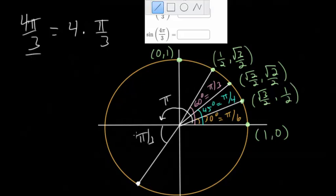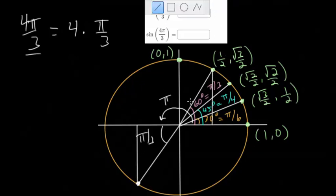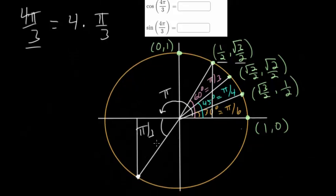Drawing in this triangle, we get the exact same triangle as the 60-degree angle in the first quadrant — a 30-60-90 triangle with the same side lengths. But since we're in the third quadrant, both coordinates are negative. The coordinates are negative 1/2 for x and negative root 3 over 2 for y. Remember, the x value is the cosine and the y value is the sine of the angle.